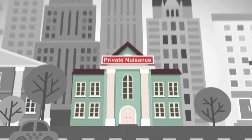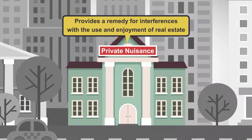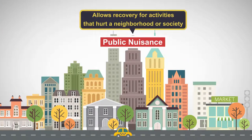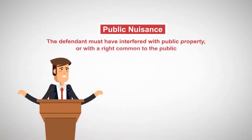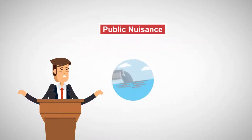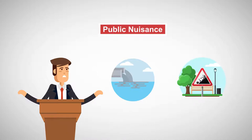While the tort of private nuisance provides a remedy for interferences with the use and enjoyment of real estate, the tort of public nuisance allows recovery for activities that hurt a neighborhood or society. To be liable for public nuisance, the defendant must have interfered with public property or with a right common to the public. Examples of public nuisance include pollution of navigable waterways, interfering with the use of public parks, and the creation of public health hazards.